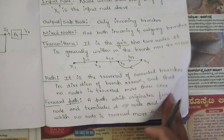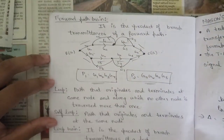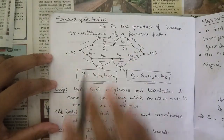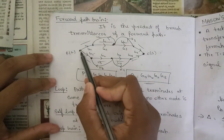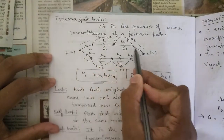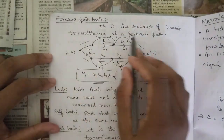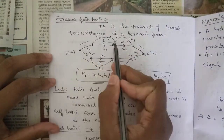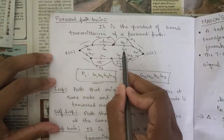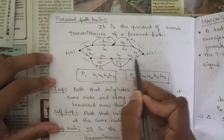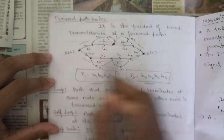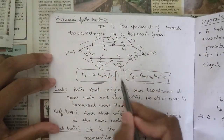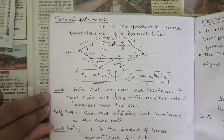Forward path gain is the product of branch transmittances along a forward path. For example, in this signal flow graph there are two forward paths. The first forward path has branch transmittances g1, g2, g3, g4 — so the gain is g1×g2×g3×g4. The second forward path has transmittances g5, g6, g7, g8 — giving the second forward path gain as g5×g6×g7×g8.